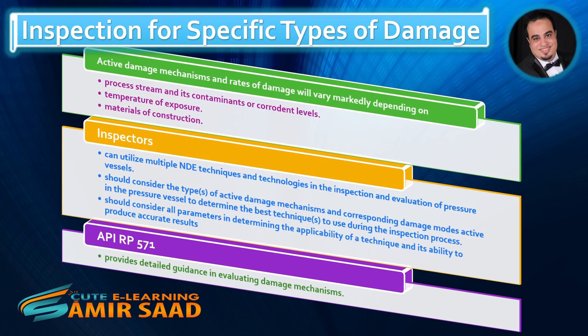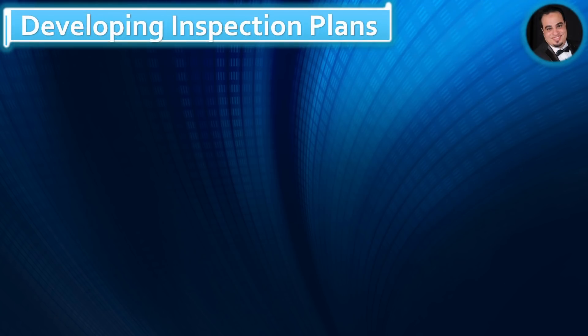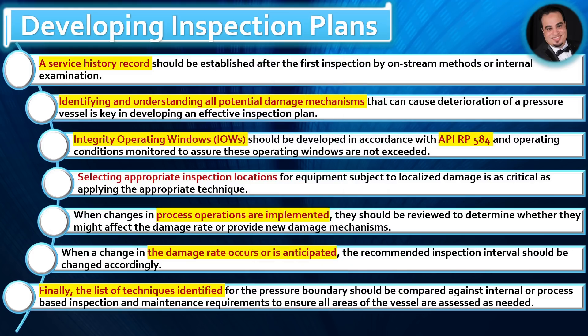API RP 571 provides detailed guidance in evaluating damage mechanisms. A service history record should be established after the first inspection by on-stream methods or internal examination, as part of the inspection plan.